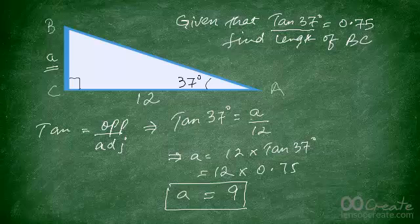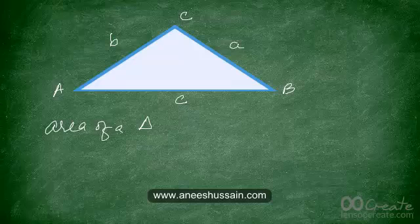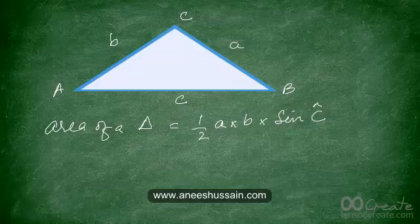Another useful application of trigonometry is finding the area of a triangle when two sides and the included angle are known. The general formula is: area of a triangle equals half times the length of a times the length of b times sine of angle C. If you know sides a and b, you need the angle between them, which is angle C.